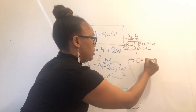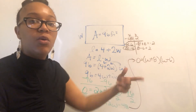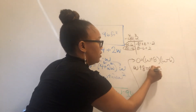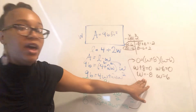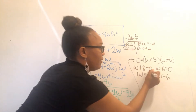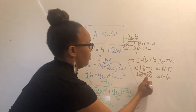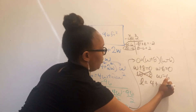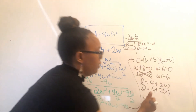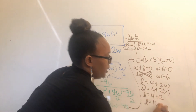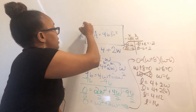So the equation factors as zero equals (W plus 8)(W minus 6). Since two things multiply to give zero, one must be zero. Setting each factor equal to zero: W plus 8 equals zero gives W equals negative 8, and W minus 6 equals zero gives W equals 6. We can't have a negative width, so the width is 6. Then the length is four plus two W, substituting six gives four plus 12, which equals 16. So the width is 6 and the length is 16.